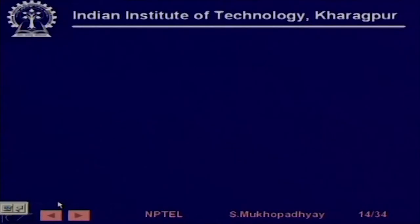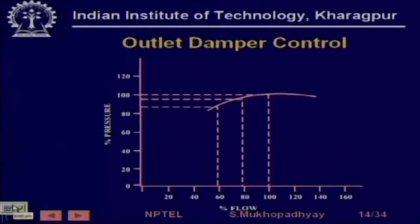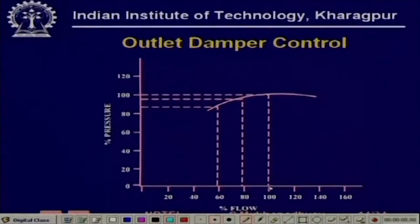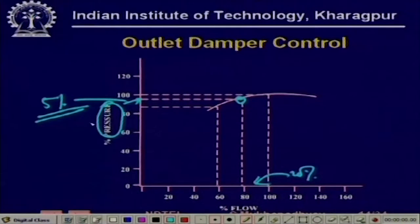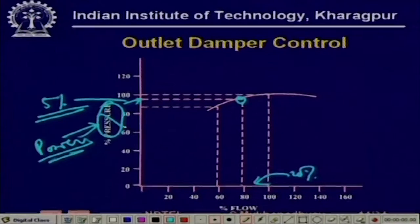The energy fall is not so much. In damper control, as you are going from 100 to 80, the energy fall is only this much — very low. So there is a 20 percent flow reduction, but there is probably only a 5 percent power reduction. That is why this method is not so energy efficient — flow is reducing but you are not saving energy. However, it is a very simple method; you only require a valve or a damper which you close and open.